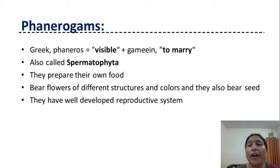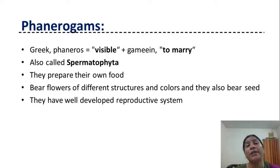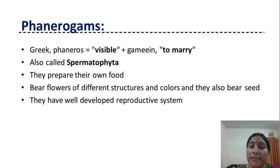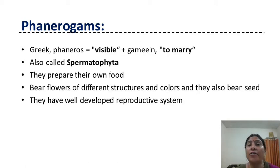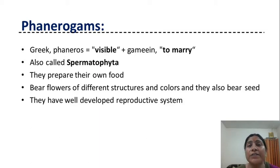Phanerogames is a Greek word — 'Phaneros' means visible and 'Gamy' means to marry. These Phanerogames are also called Spermatophyta. Sperma means seeds and Phyta means plants, so Spermatophyta means those plants which bear seeds. These Phanerogames bear flowers, fruits, and seeds, and that is why they are called Spermatophyta.